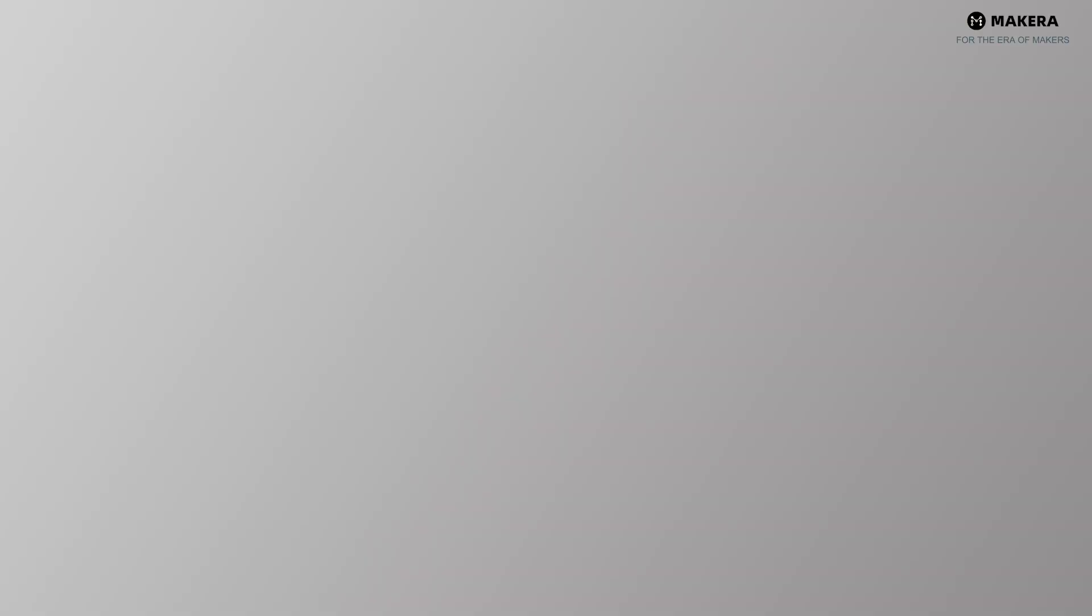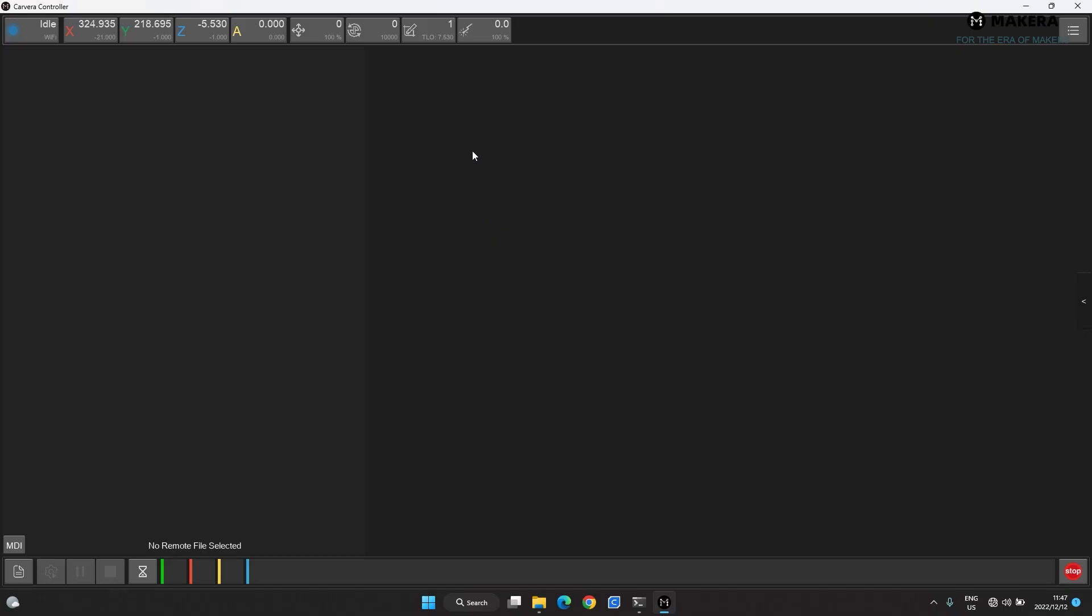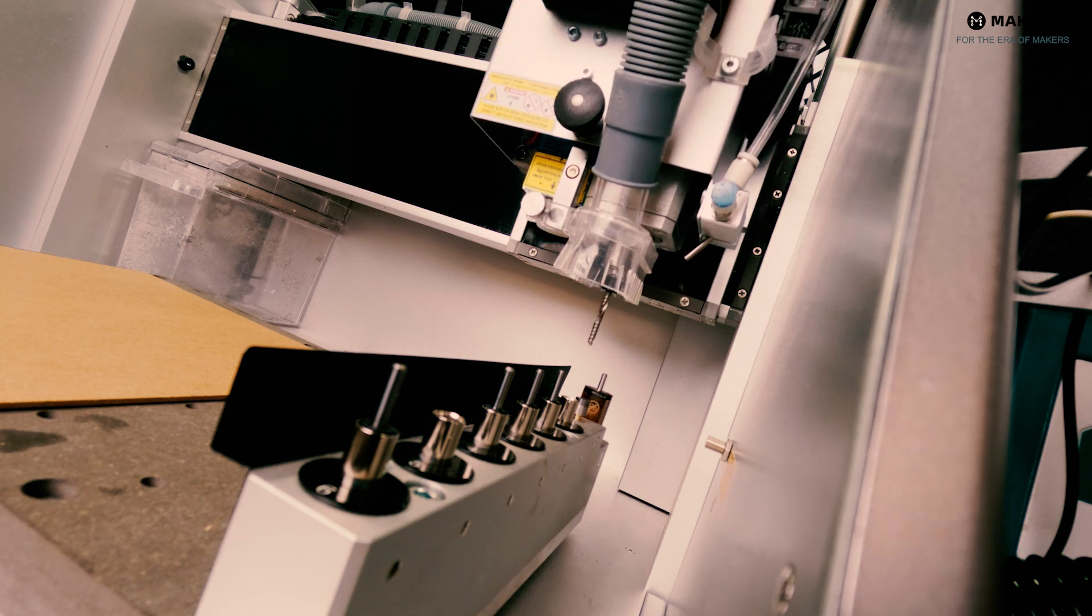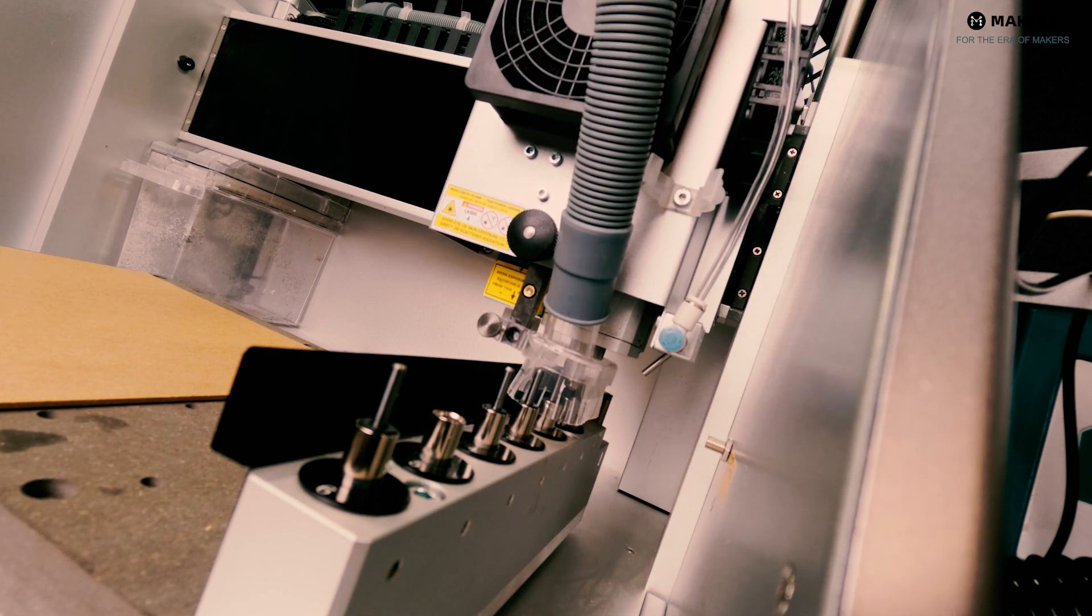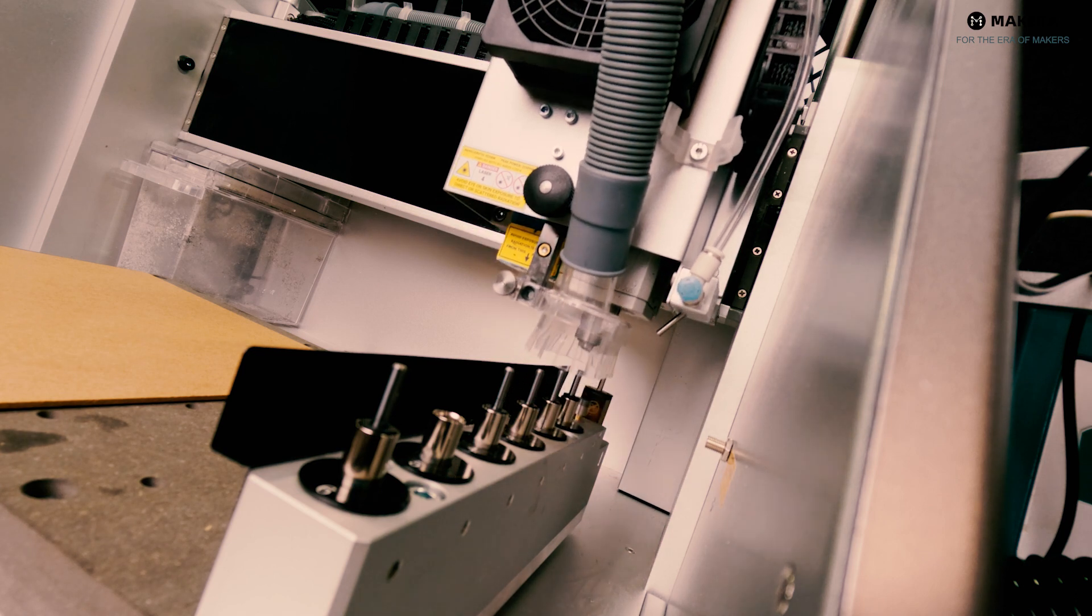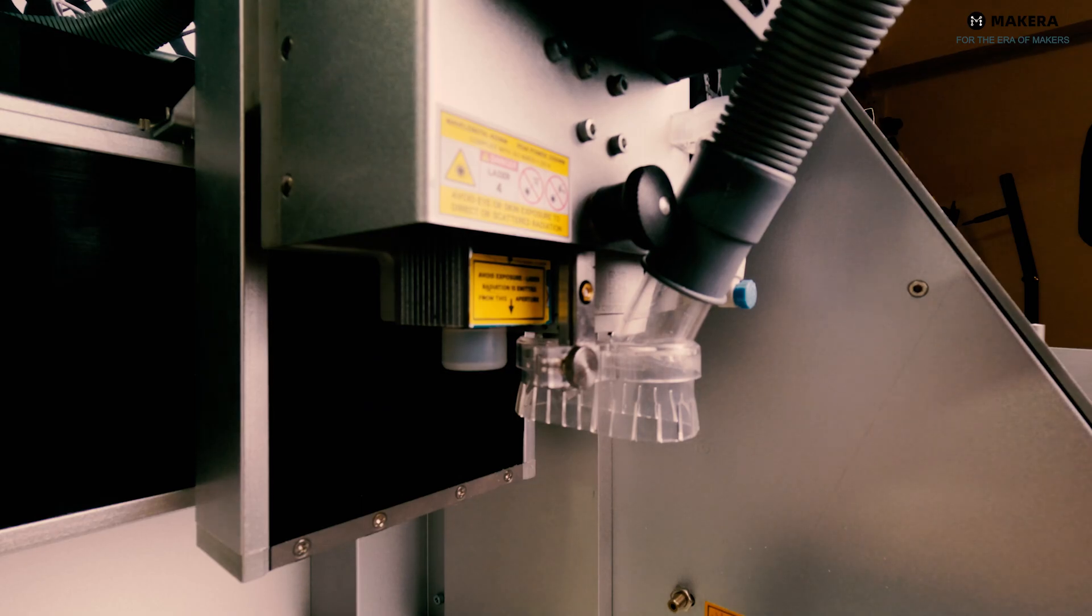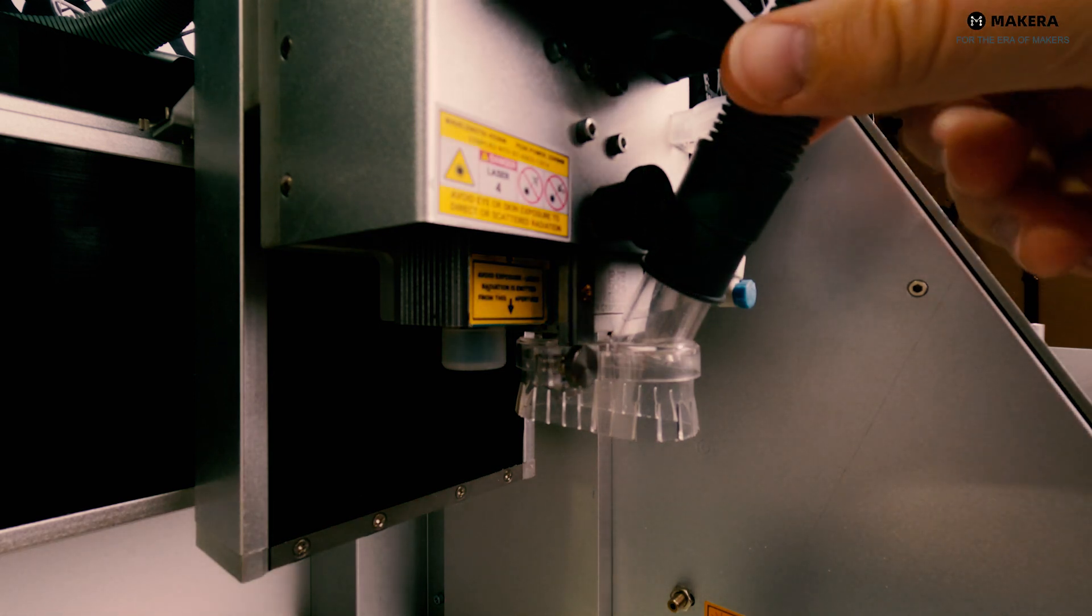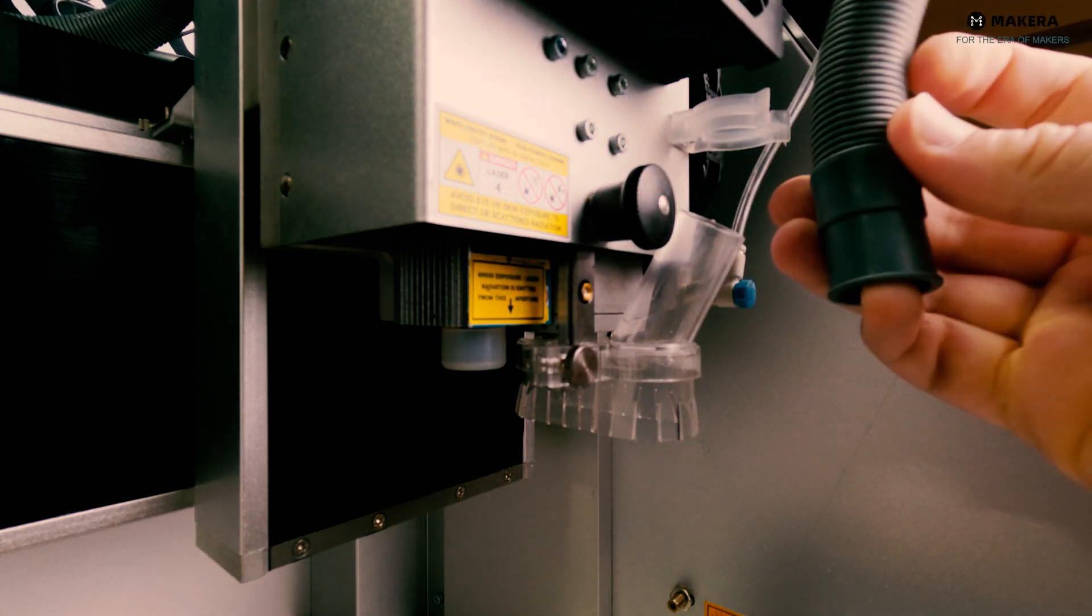Changing the collet. First, you need to drop the tool that is currently in the collet, so we will do that in the controller by clicking drop in the tool status drop down. This will release the tool automatically. I will remove the dust foot and use the collet installer to unscrew the existing collet, replace this with the needed collet and re-screw with the collet installer.